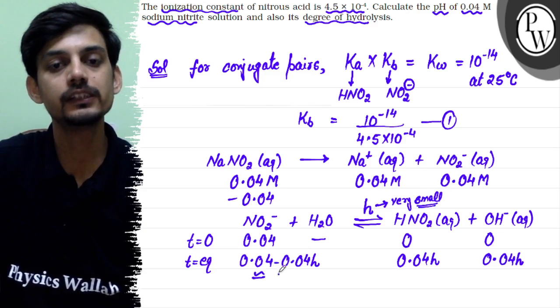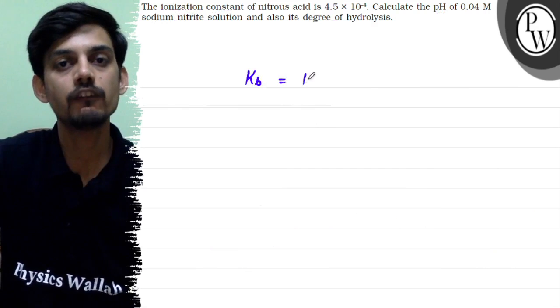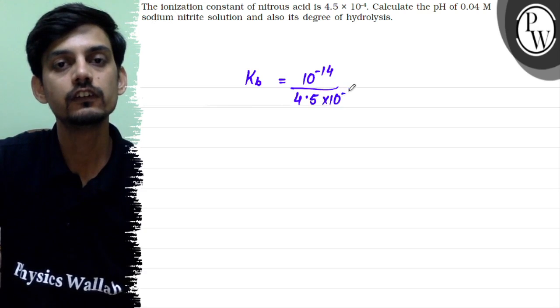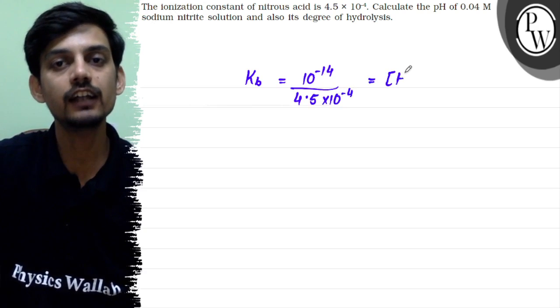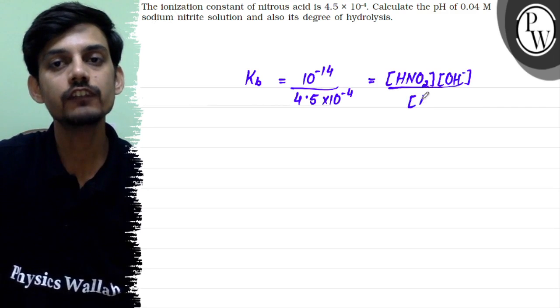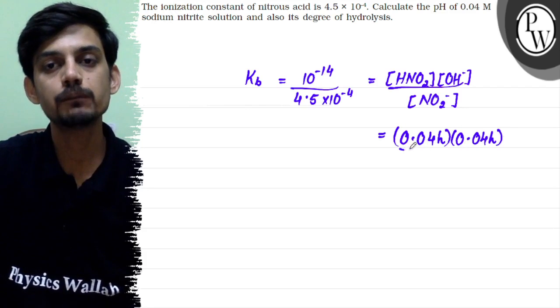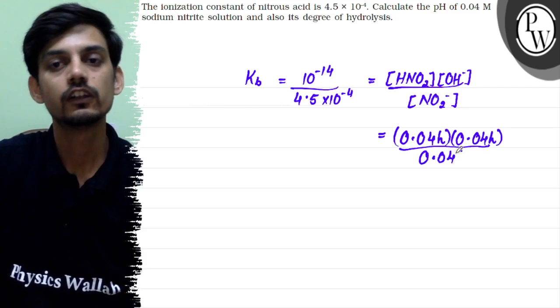We can approximate this to be 0.04 moles per liter. So now we can see that Kb which is 10^-14 divided by 4.5 × 10^-4, this will be equal to concentration of unionized nitrous acid times concentration of OH- divided by concentration of nitrite. So this is 0.04H, this is also 0.04H, and after approximation this is 0.04. This will be cancelled out.